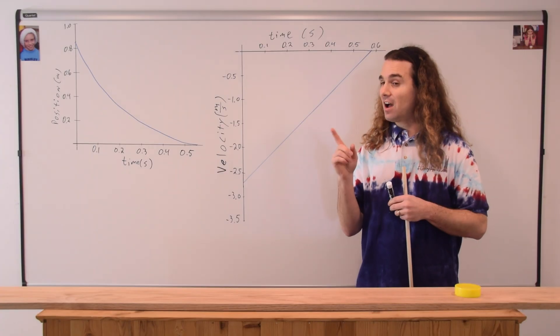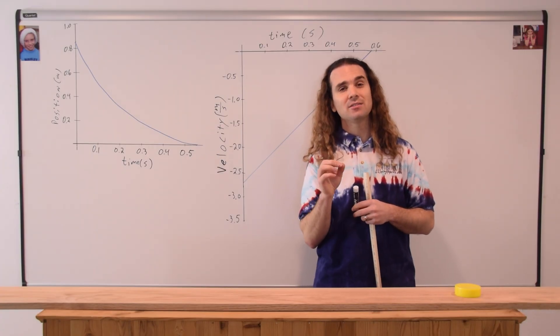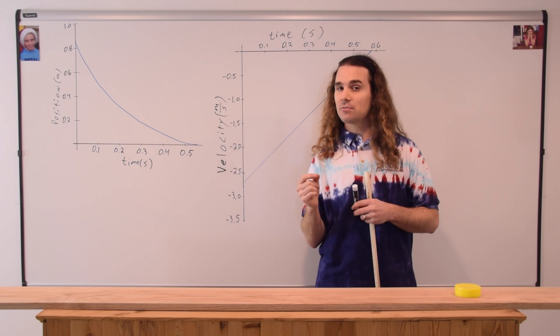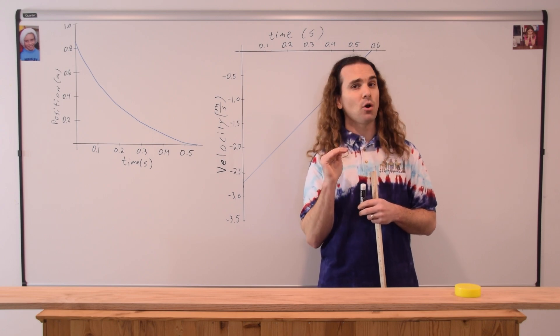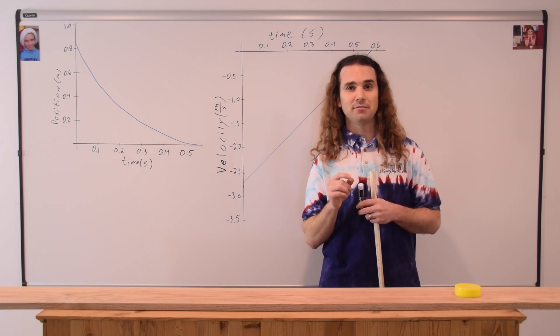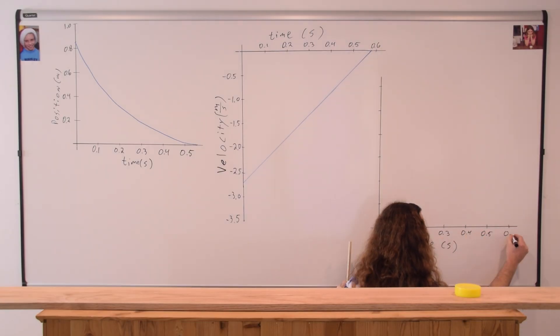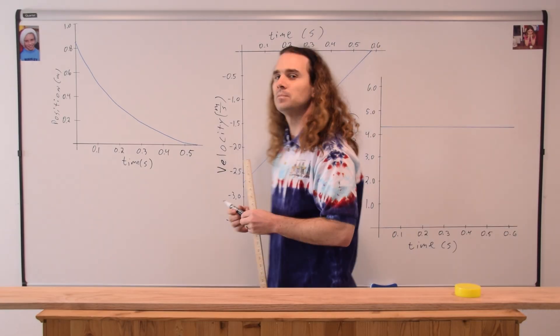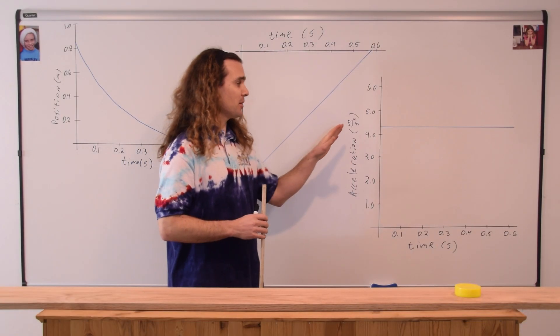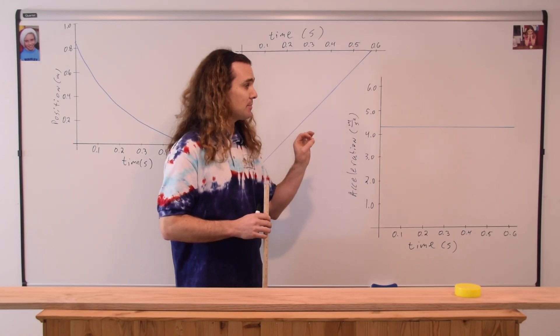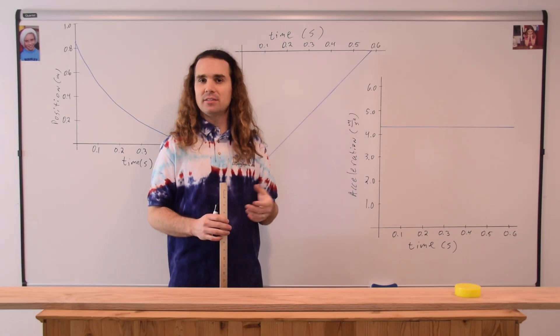Yes, because the acceleration is both constant and positive, the acceleration as a function of time graph should have a horizontal line with a positive value. Again, the puck should be experiencing uniformly accelerated motion, or UAM. Let's see if it is.